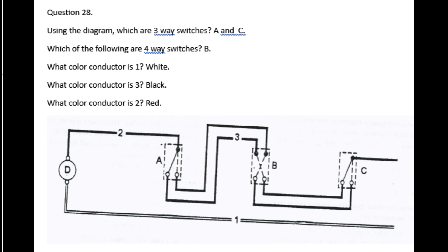What color conductor is one? White. What color conductor is three? Black. What color conductor is two? Red.